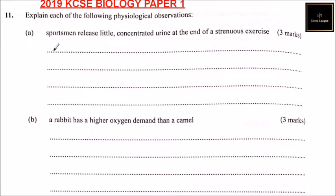So you would say: during and after, or during the exercise, the sportsman loses a lot of water leading to dehydration. The rest is absorbed in the kidney, leaving concentrated urine. You can write it like that.